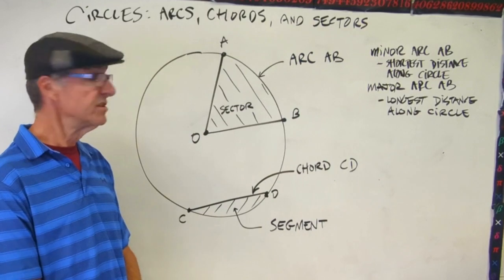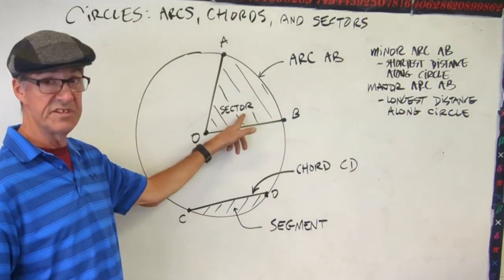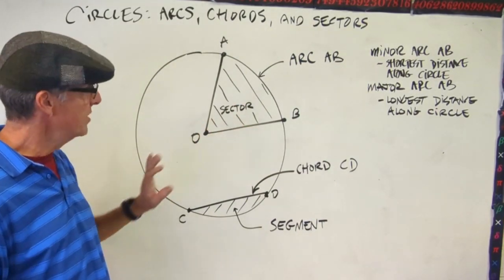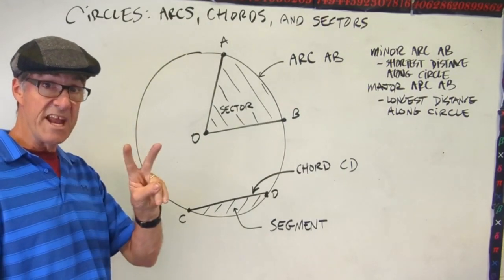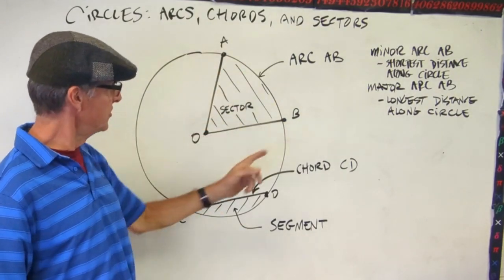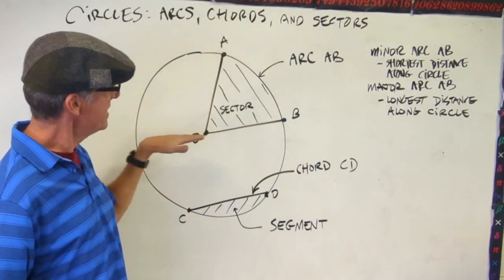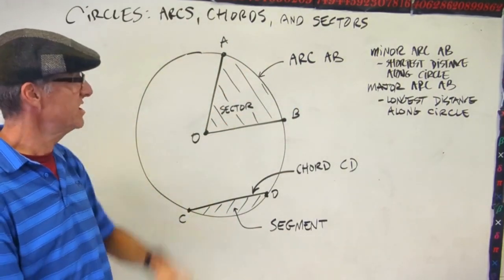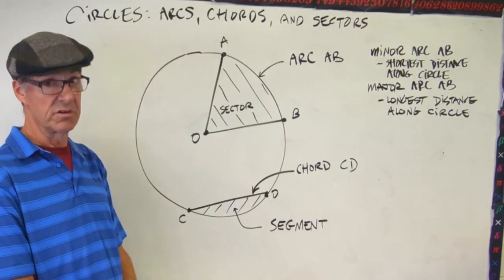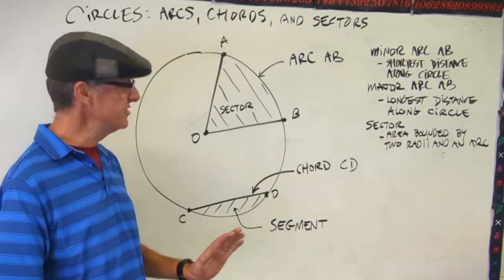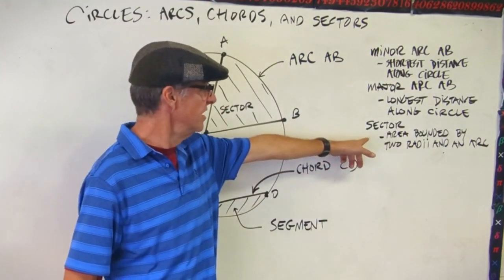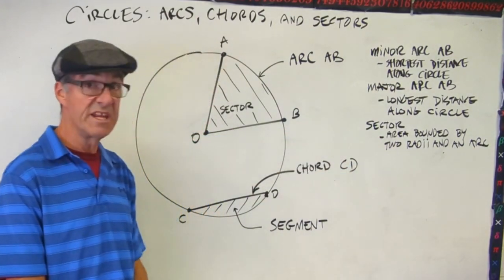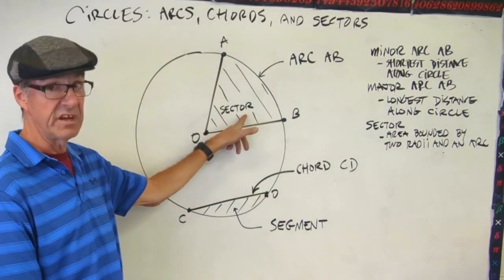Now let's talk about sectors. You can see I shaded this sector. The sector is the region bounded by two radii and an arc. In this case, radii OA and OB and arc AB. Those are the three boundaries of this particular sector of the circle. So just for your notes, I've added a definition of a sector: an area bounded by two radii and an arc.